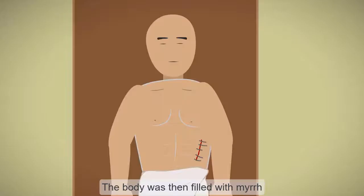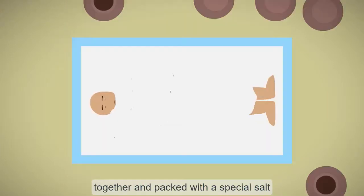The body was then filled with myrrh, cassia, and other spices, then sewn up together and packed with a special salt, called natron, for up to 70 days which prevented the flesh from rotting.